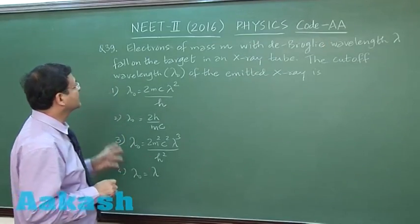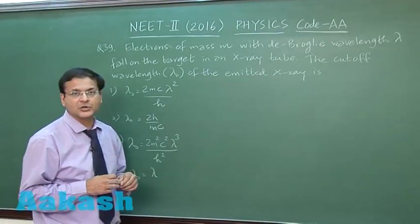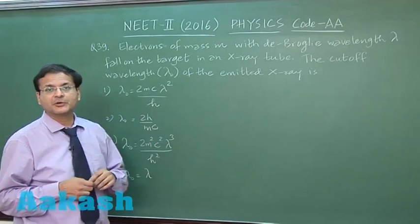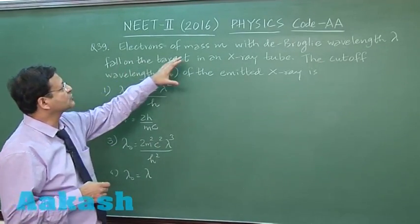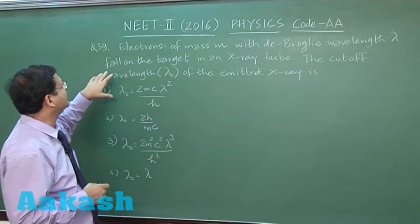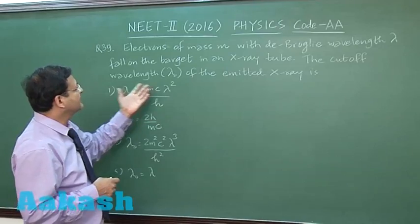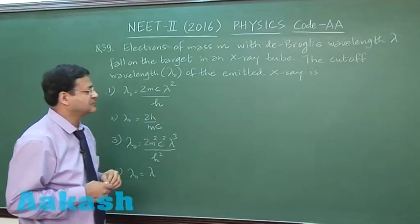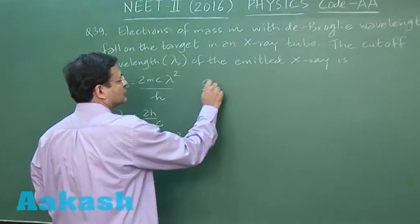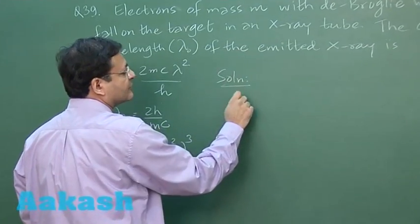Now this question 39 is based on dual nature of radiation and matter and it is using the concept of x-ray tube also. It says that electrons of mass m with de Broglie wavelength lambda fall on the target in an x-ray tube. The cutoff wavelength lambda naught of the emitted x-ray, so first of all try to write down what is the cutoff wavelength for x-ray.